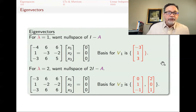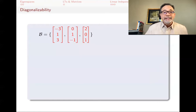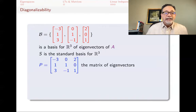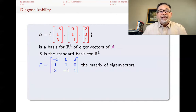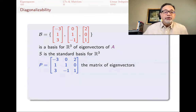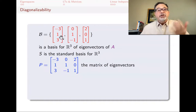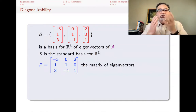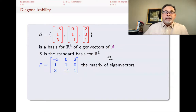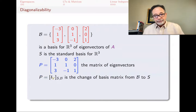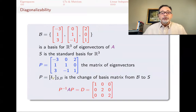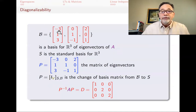So I have found all eigenvectors. Eigenvectors for eigenvalue 1 are multiples of (−3, 1, 3). Eigenvectors for eigenvalue 2 are linear combinations of the two basis vectors of V2 (excluding zero). My new basis is made up of these three eigenvectors. The matrix P is formed by making these basis vectors the columns of the matrix — since we are writing them in terms of the standard basis, this is the change-of-basis matrix from the new basis B to the old basis S. Then P inverse AP equals D, the diagonal matrix with eigenvalues 1, 2, 2 on the diagonal, in the order of the basis vectors.